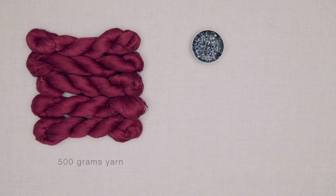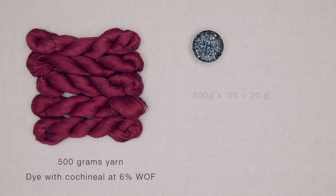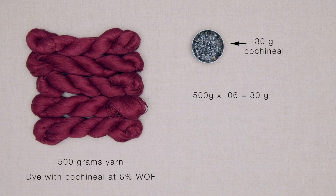Let's say I want to dye 500 grams of yarn at 6% weight of fiber. I just take 6% of 500 grams: 500 grams times 0.06 equals 30 grams. So I need 30 grams of cochineal to achieve the same color on five skeins instead of just one.